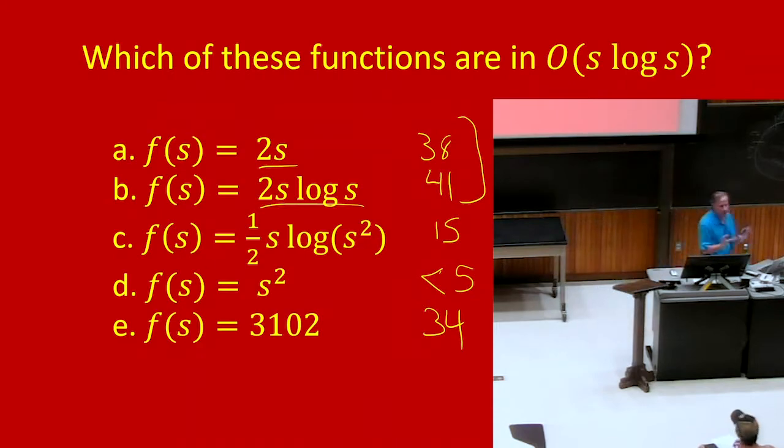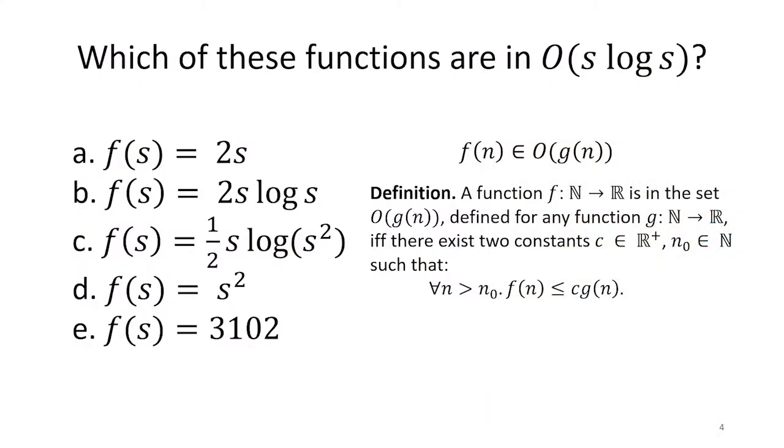There is some disagreement about the best way to define what big O means. This is the definition that we used last class and the one that we will use throughout this class. This is the definition that says we're defining big O. It's defined as a set of functions. And what that set is depends on the function that is inside the O. In order to be in that set, it has to be the case that we can find two constants. One is positive. One is a natural number, so it could be zero. It's not required that n zero is positive.